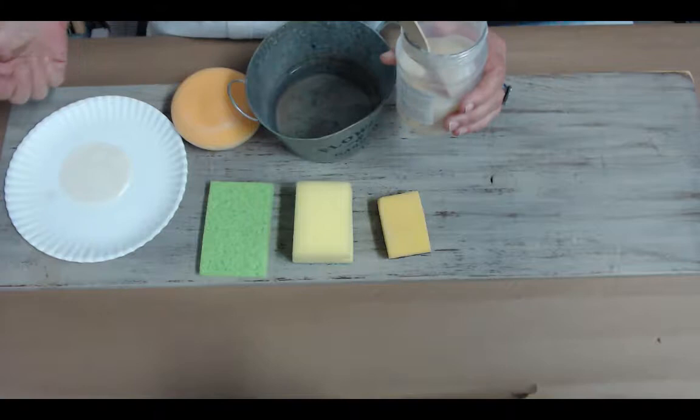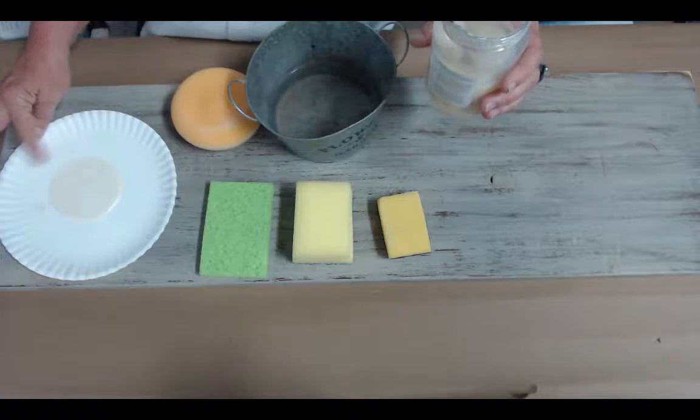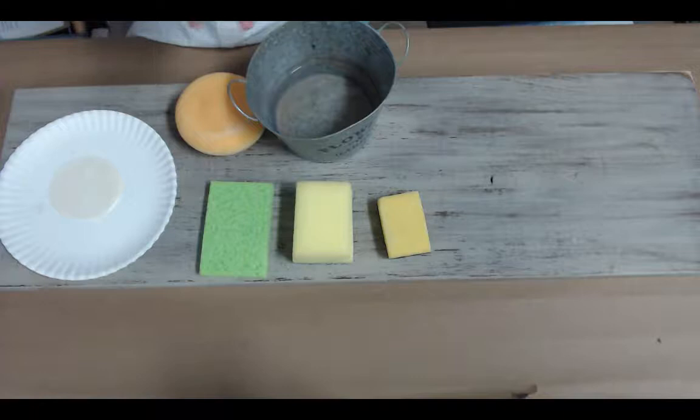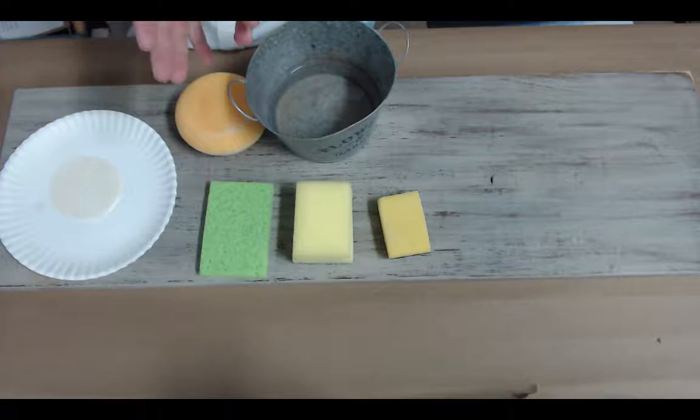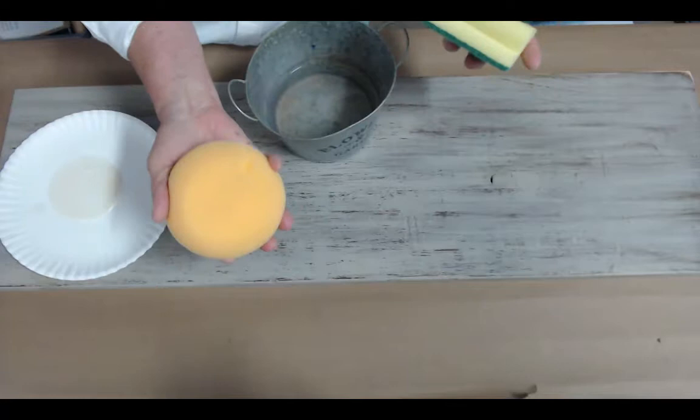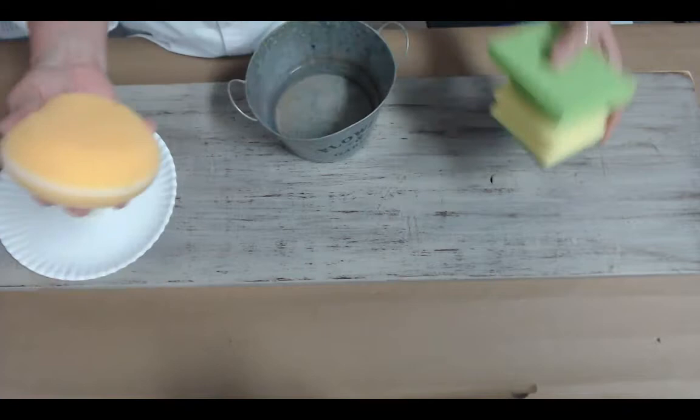We always suggest that you pour your product into a paper plate so you don't contaminate your container. You can use sponges to apply, which really helps eliminate drips or uneven buildup. I really like Ms. Lillian's sponge because it fits in my hand nicely.